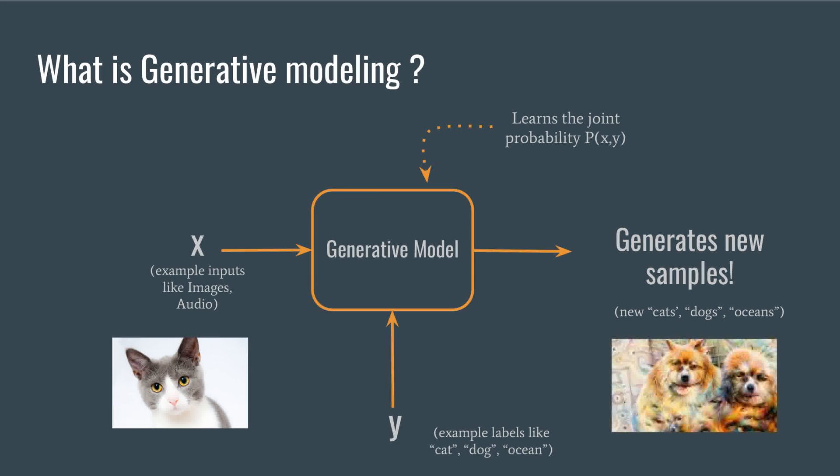Generative models are those models which can generate new samples like images, sound, etc. from scratch given training data. Thus given input data X and label Y for X, generative models calculate the joint probability P of X comma Y. This joint probability is then used to generate new samples.